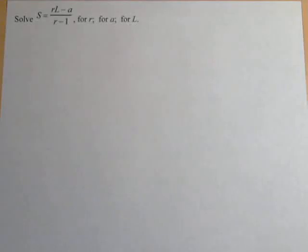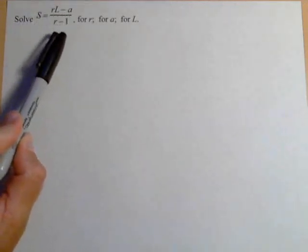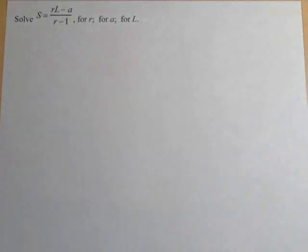In this video, we're gonna look at solving a literal equation, S equals RL minus A over R minus one, for three separate variables. One's for R, one's for A, and one's for L. So we'll do all these together, so let's do R first.